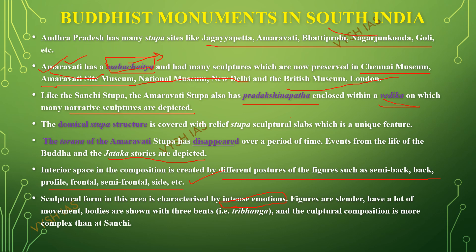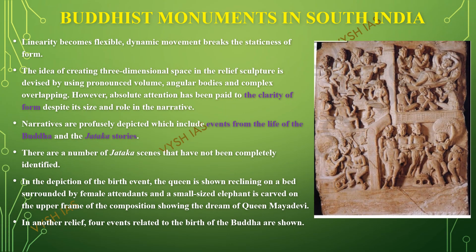The bodies are shown with three bends in the tribhanga posture, and the sculptural composition is more complex than at Sanchi. The linearity becomes flexible, and dynamic movements are given — different postures like front, back, and every angle are shown, which breaks the static form.